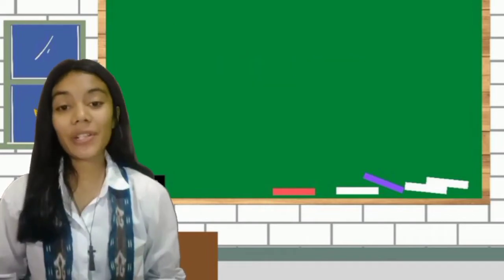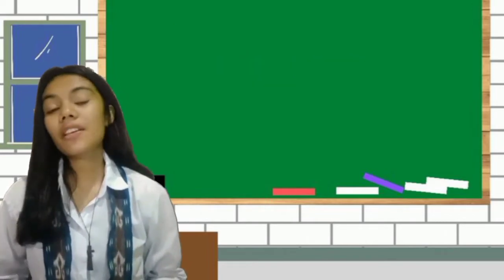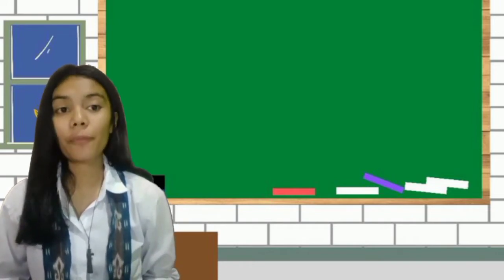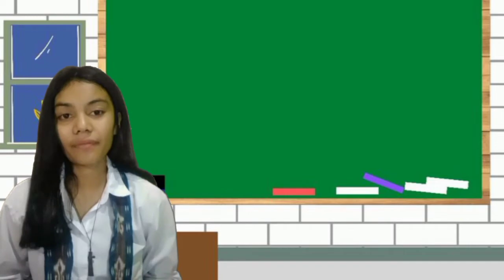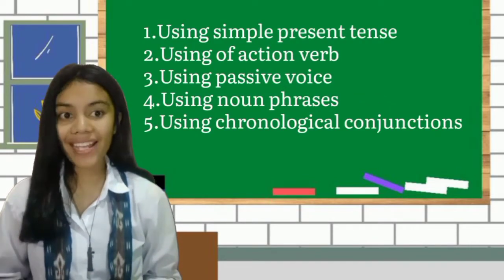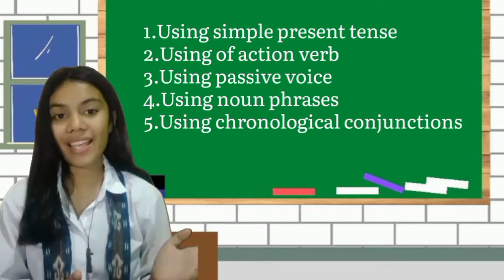So that you are not curious, there are several special characteristics of explanation text that distinguish it from other types of writing. The first one, because this type of writing discusses facts, the tense used is simple present tense.